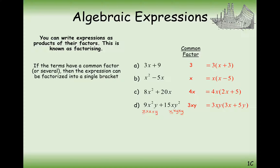So the common factor is 3xy, and that goes at the front of a bracket. Then we need to think what we have left over. To make the 9 I need to times 3 by 3. To make the x squared, I've already got one x, so I need another x inside the bracket. For the 15xy squared, I've got 3 already so I need to times by 5, and I need an extra power of y to make it y squared, so I times by y on that 5 as well.